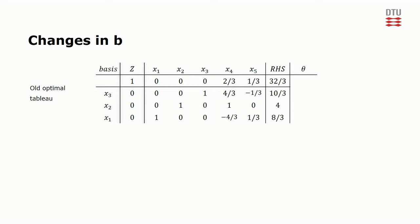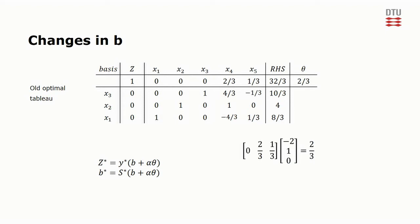Using the fundamental insight we can determine the values in the theta column. First the theta part of the objective function is calculated, and then the theta part of the right-hand side of the constraints. This gives us an optimal objective value of 32 thirds plus 2 thirds theta.